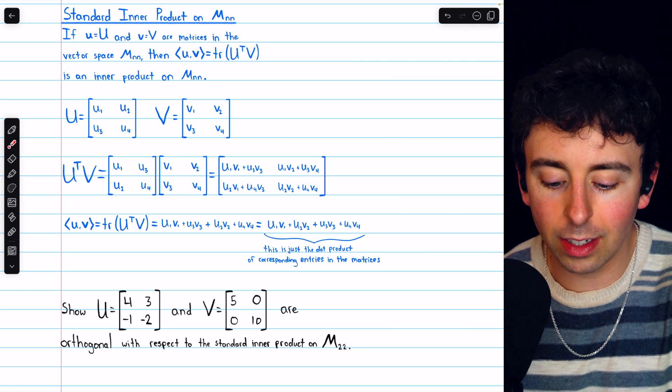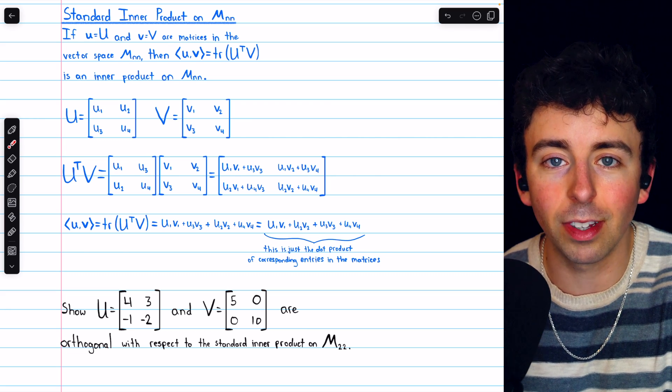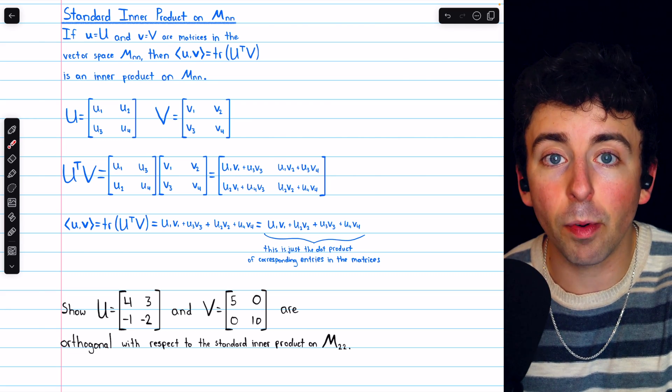And if you work that out, it turns out to be the sum of the products of the corresponding entries of the matrices. So it's a lot like a dot product.